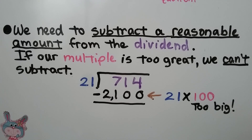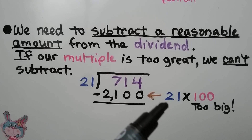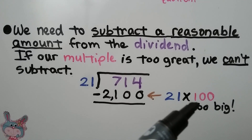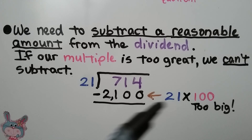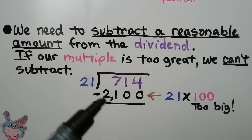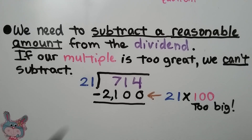We need to subtract a reasonable amount from the dividend. If our multiple is too great, we can't subtract. If we use 21 times 100, that's 2,100 — too big to subtract from 714. It would have been better if we used 21 times 10.